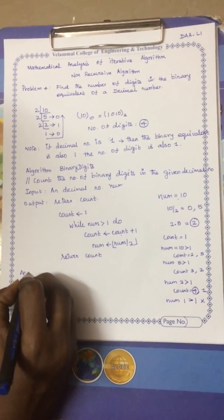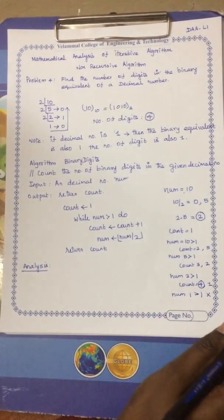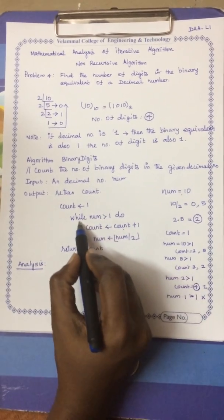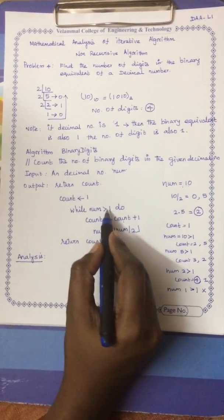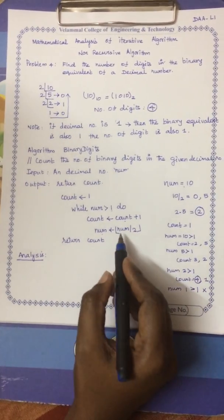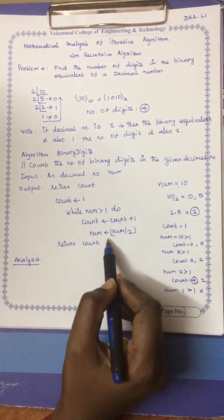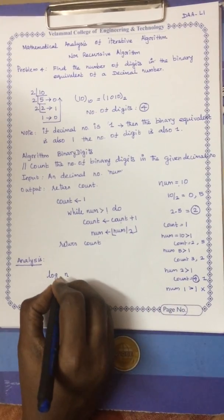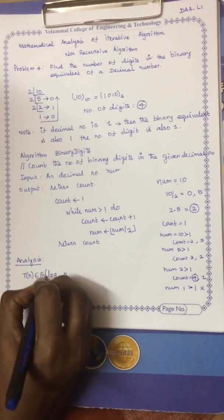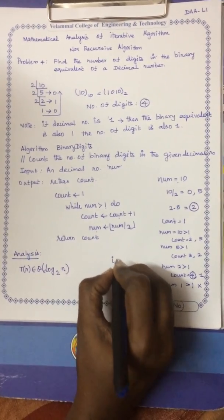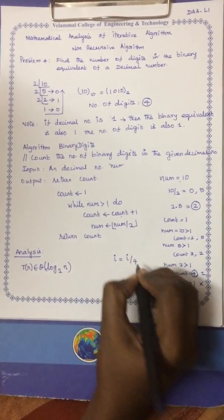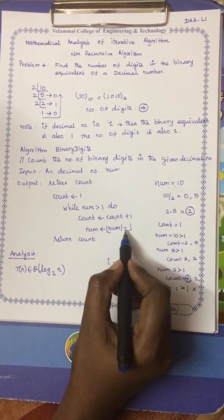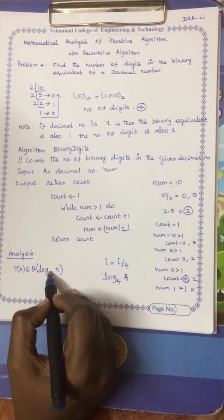Now we do the analysis. For iterative algorithms we try to write a summation formula, but here we have a while loop where each iteration the number is divided by 2 (decremented by a factor of 2) instead of 1. Whenever the increment or decrement happens by a value greater than 1, we write the time complexity in logarithmic form. So T(n) = log n to the base 2. For example, if the number were decremented by a factor of 4 each time, it would be log n to the base 4.